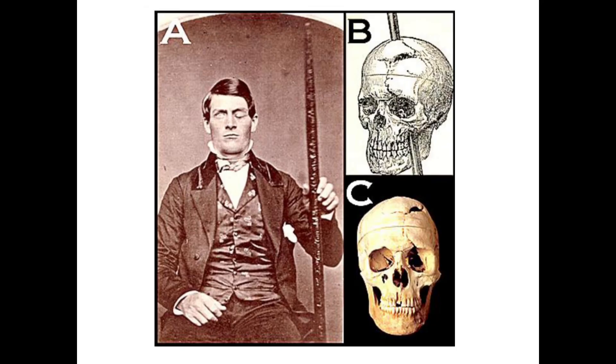So, actually we have a real picture of Phineas Gage, so you can see him on image A, and then image B shows how a bar went through his head, damaging part of the prefrontal cortex, which is the one we're going to study in this chapter. And you can see in figure C the real skull from Phineas.